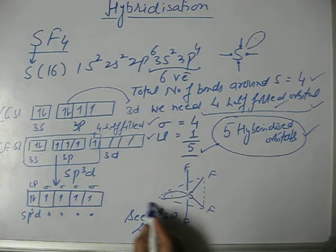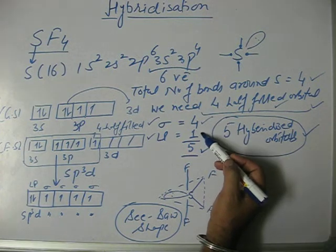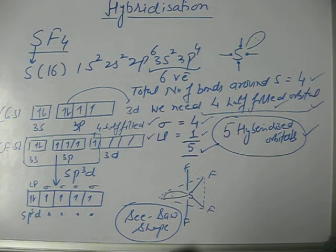Ultimately we have found that SF4 has a seesaw shape, and we have explained the bonding, the formation of four sigma bonds, one lone pair around sulfur, using the concept of hybridization.